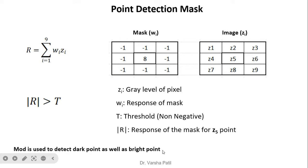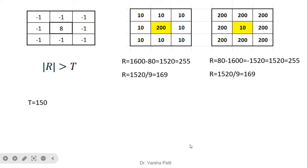If the result is greater than the threshold, the point is detected. We use the absolute value to detect both dark and bright points. In the image, there is a bright point on dark background and a dark point on bright background. We need to detect both points. We overlap this mask on the image and calculate the result by multiplying all surrounding values by 10 and the center value 200 by 8.